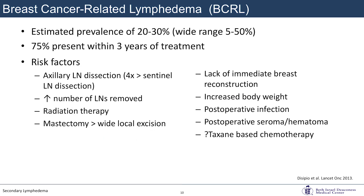For breast cancer-related lymphedema specifically, prevalence ranges from 20 to 30% most commonly, but widely from 5 to 50% depending on the study. About 75% of patients present within three years of initial treatment. Risk factors include: axillary lymph node dissection — which increases risk fourfold over sentinel lymph node dissection — increased number of lymph nodes removed, adjunctive radiation therapy, mastectomy over wide local excision, lack of immediate breast reconstruction, increased body weight, post-operative infection, post-operative seroma, hematoma, and a possible role for taxane-based chemotherapy.